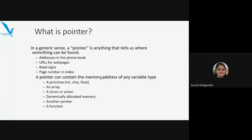A pointer can hold the memory address of any variable type. It can be a primitive type, a pointer helping to manipulate arrays, a pointer to structure or union, a pointer to dynamically allocated memory, a pointer to another pointer, or a pointer to a function. By the end of this unit, we have to learn using pointers for any of these structures.